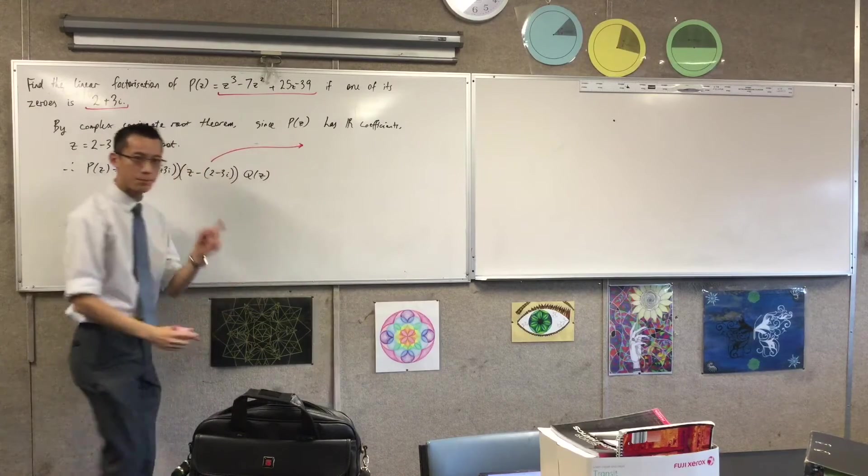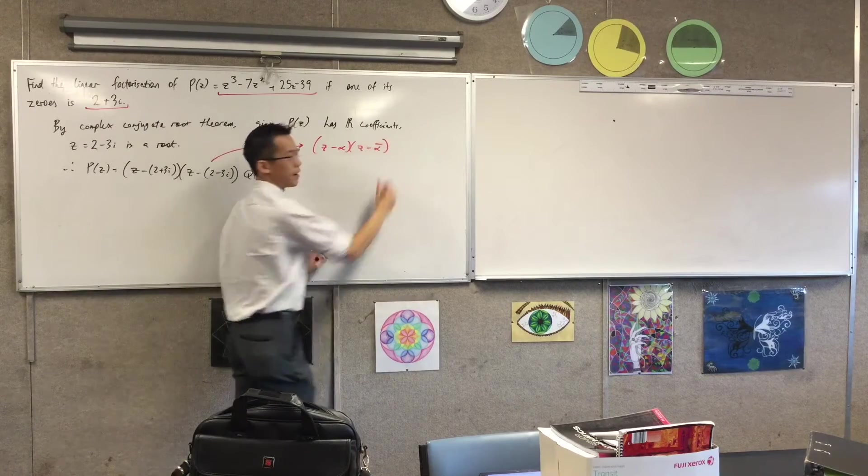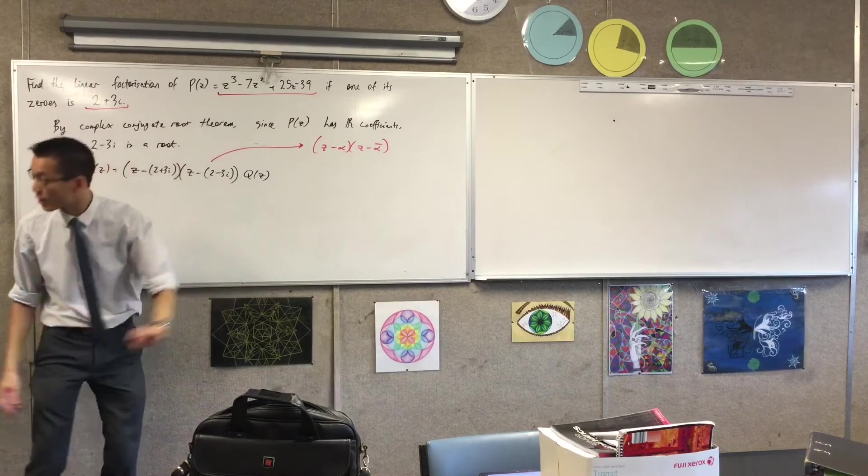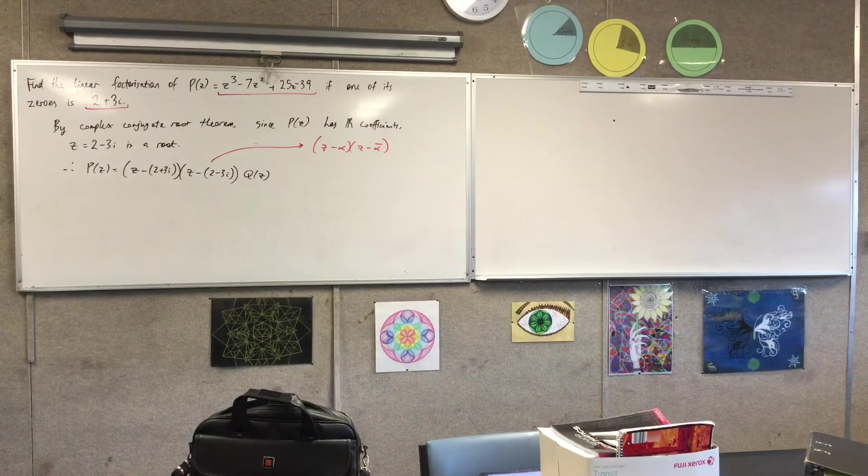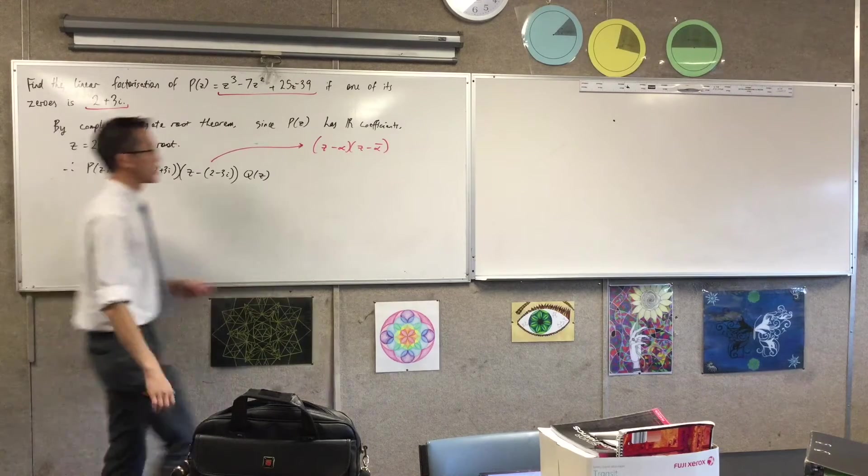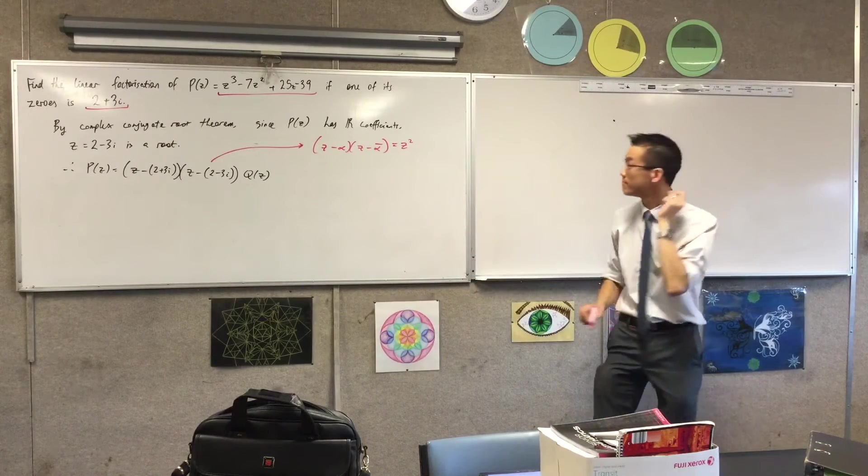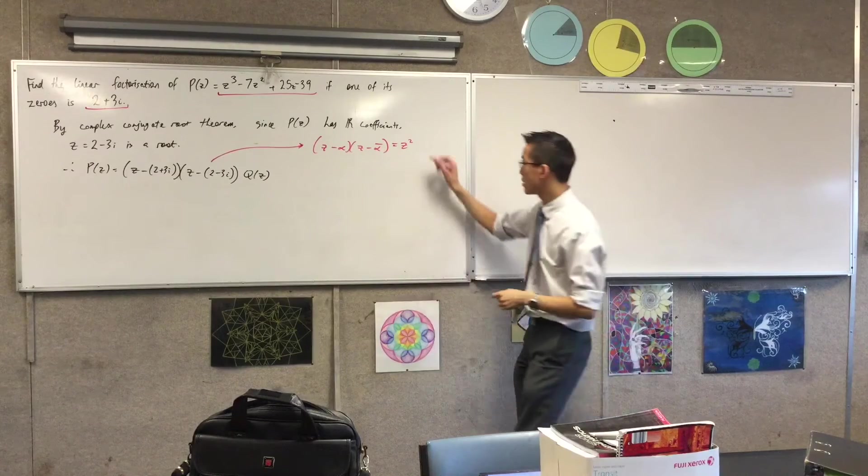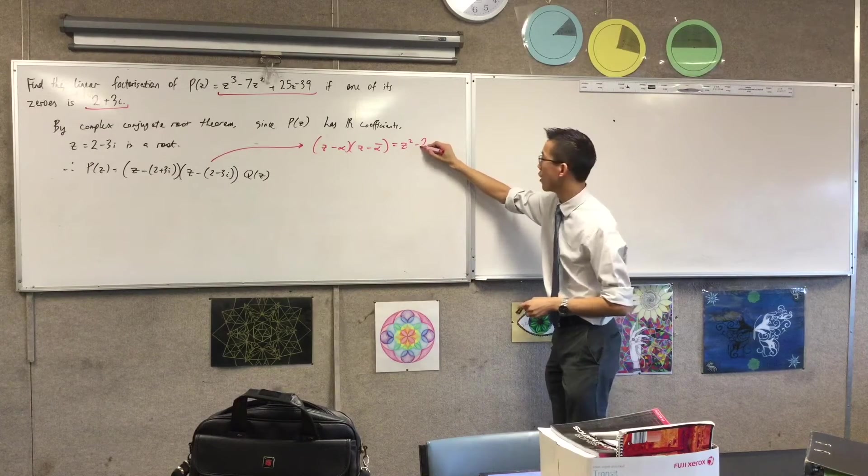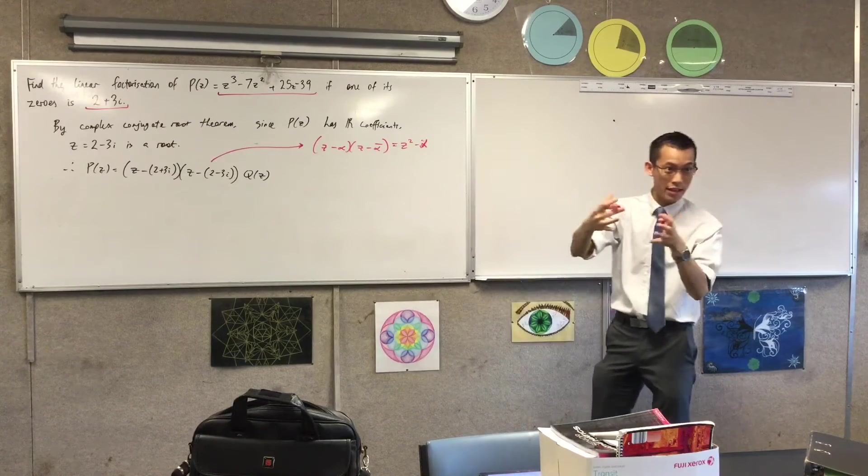So maybe just off on the side here as a secondary note. If you have z minus alpha and z minus alpha bar, think about this for a second. Just think about how it's going to expand as a binomial. What are we going to get? You're going to get z squared out the front, minus... It's going to be alpha... You're going to put them together, right? So if I say alpha z, it's going to be also alpha bar z.